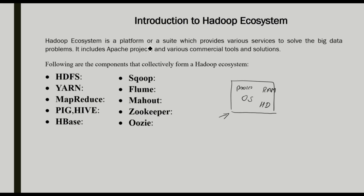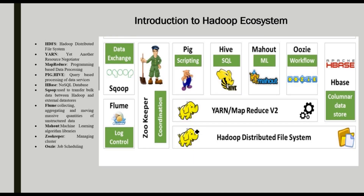The components of the Hadoop ecosystem are: HDFS, Yarn, MapReduce, Pig, Hive, HBase, Sqoop, Flume, Mahout, Zookeeper, and Oozie. Now let's take a look at the details. We have a logical representation of a computer system called the Hadoop ecosystem.